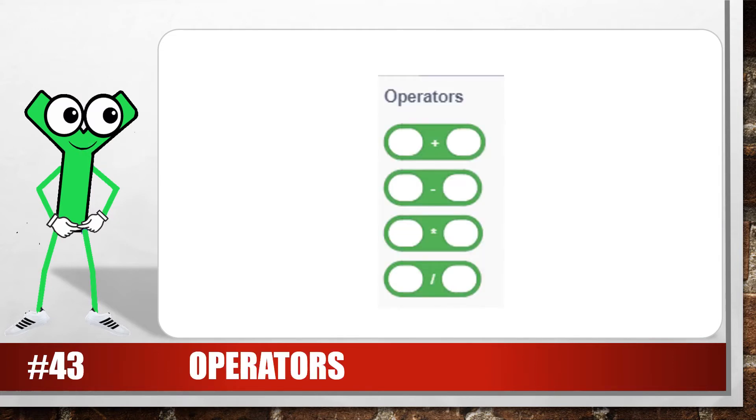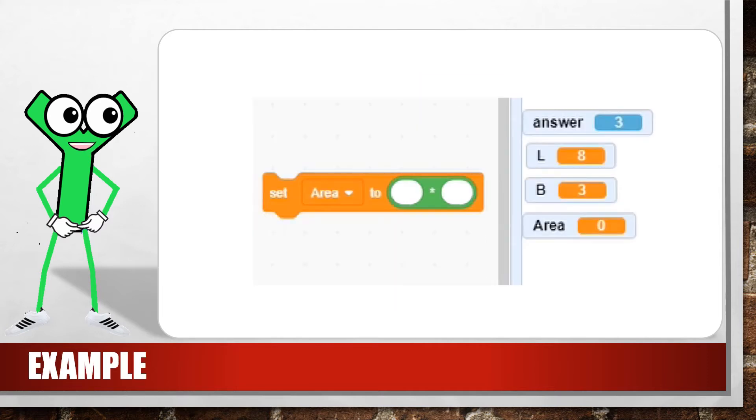To do calculations, we use the light green blocks in the operators group. These light green blocks will add, subtract, multiply or divide the values in the parameters and then contain the answer. The numbers can be typed in directly into the blocks or you can drag variables into the placeholders.